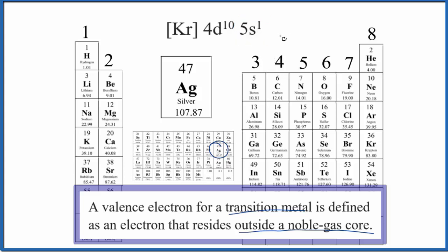So either way, just be able to defend your answer to your instructor. If you follow this definition, we have 11 valence electrons for silver.